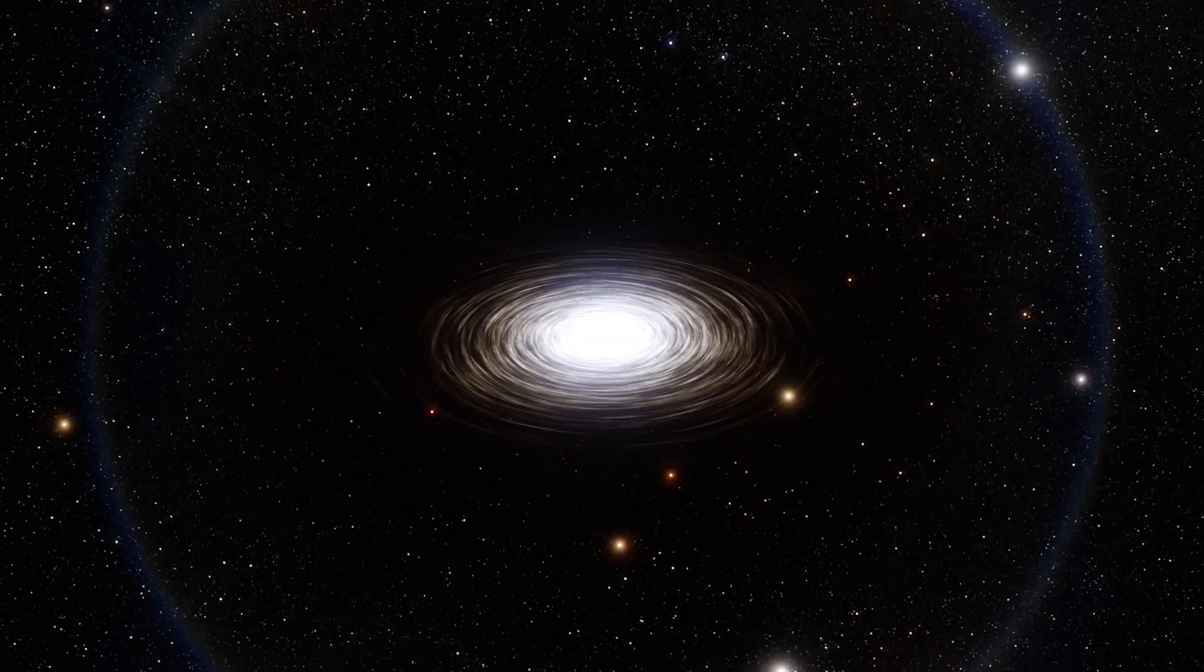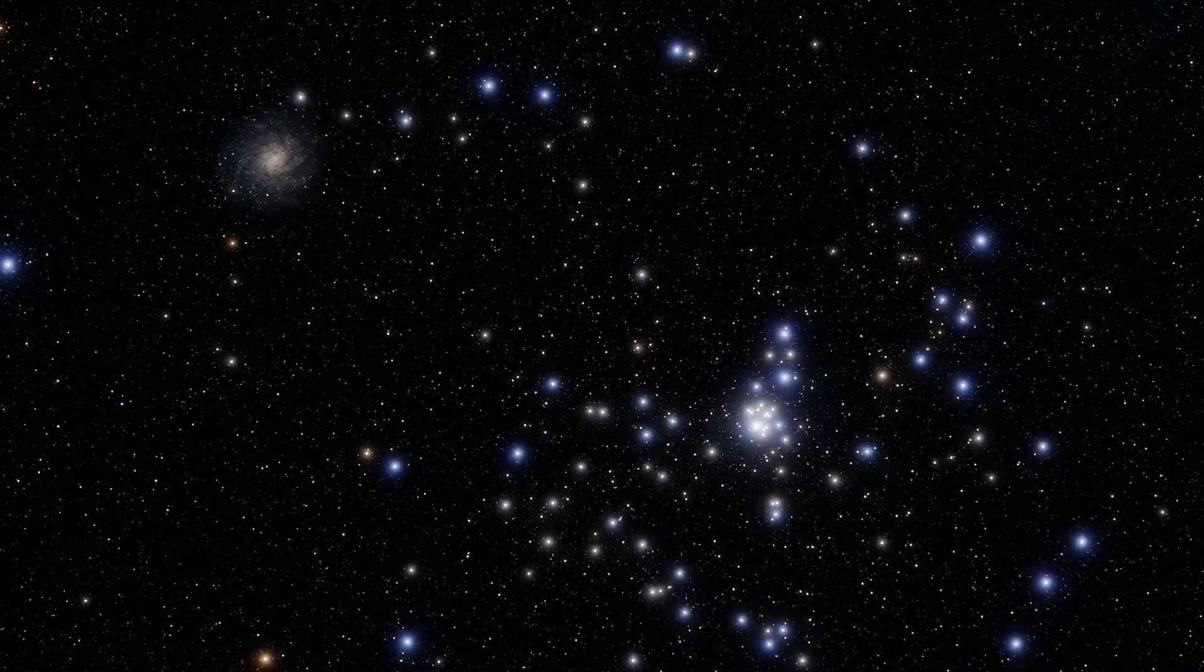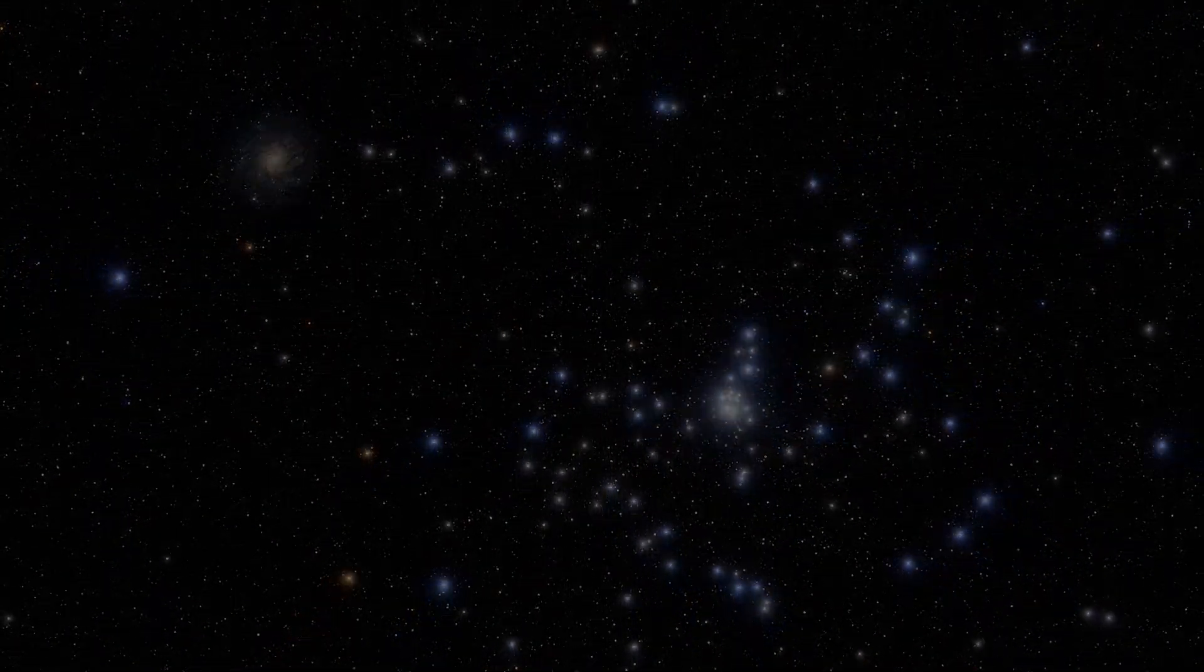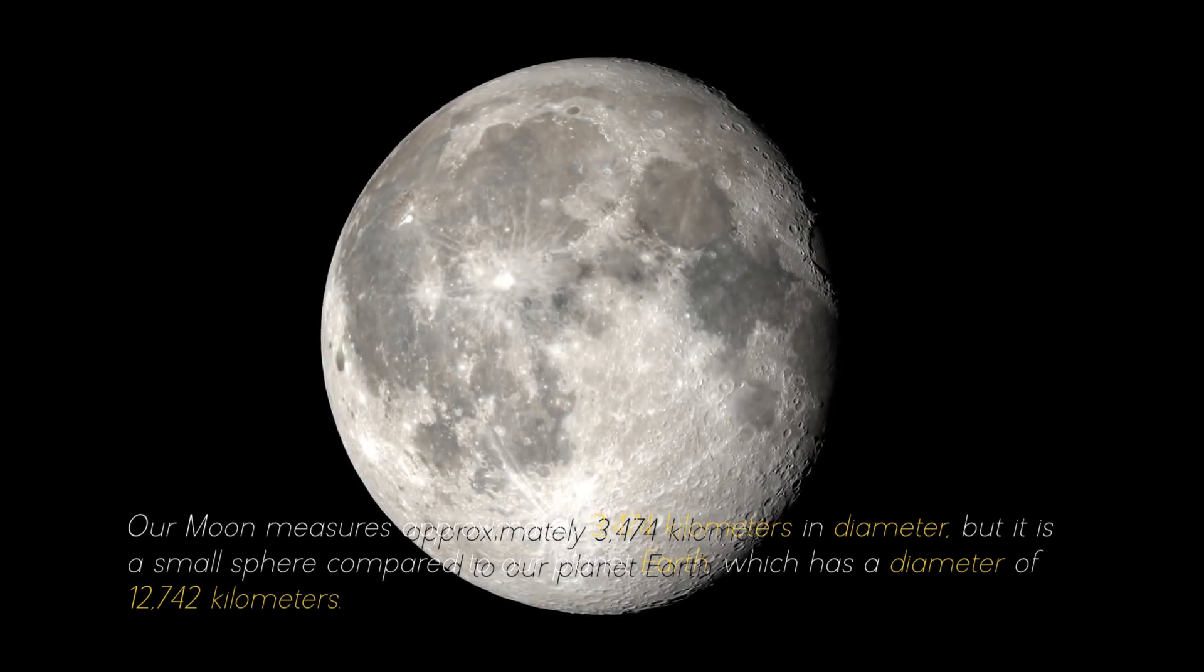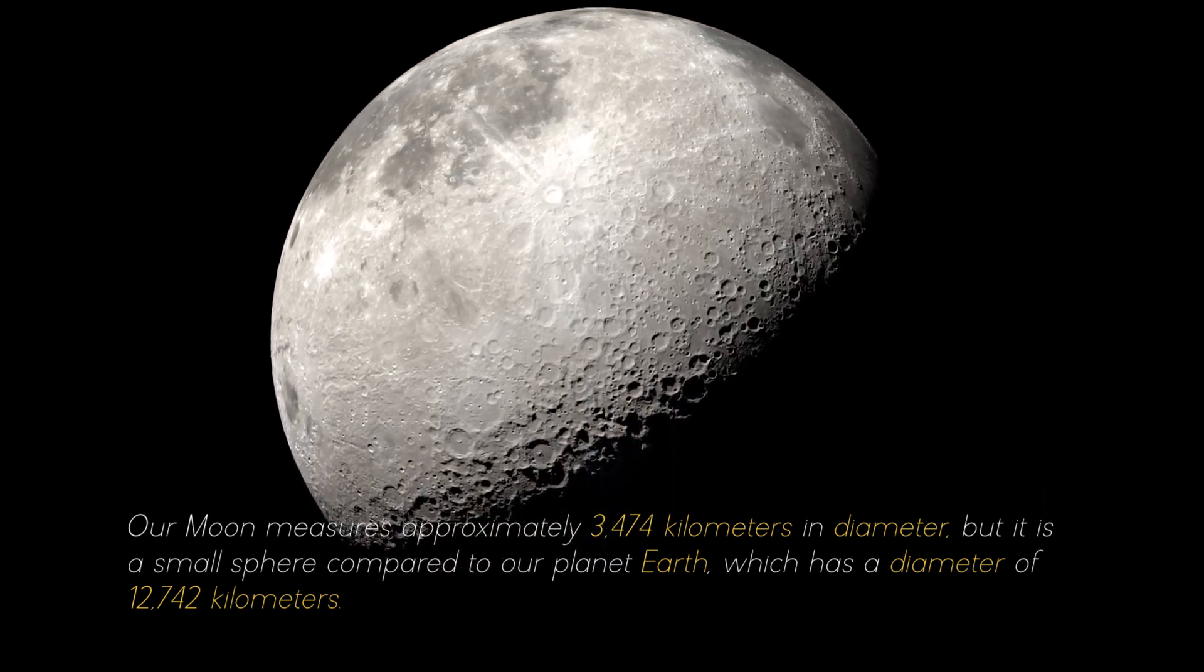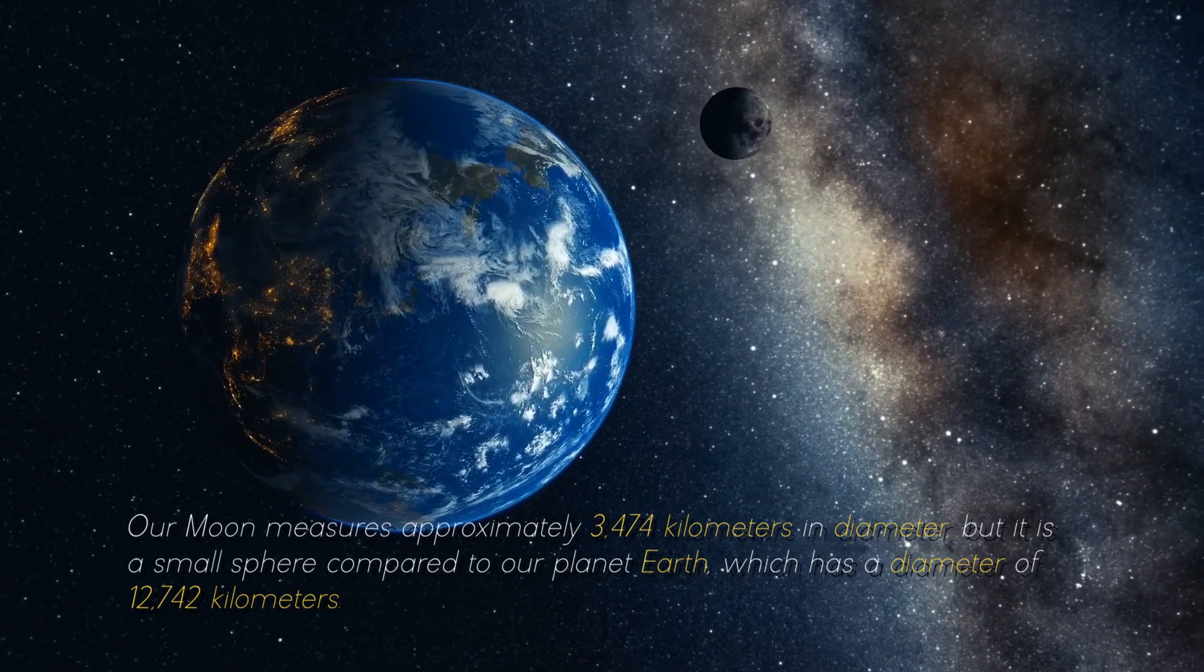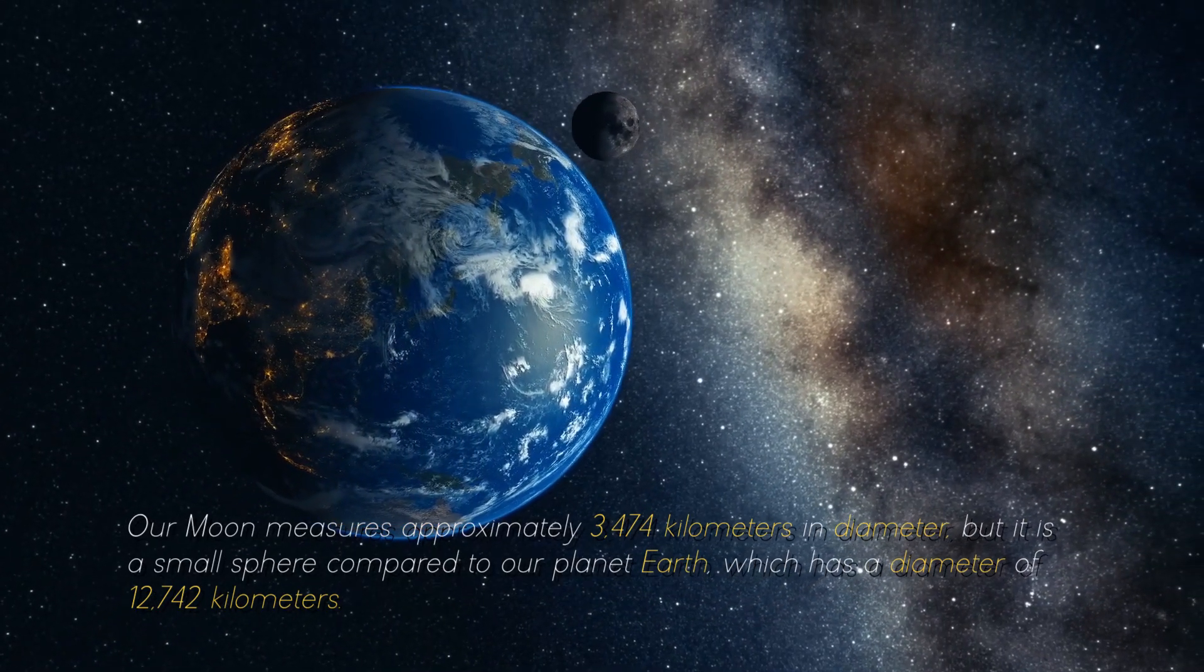To give you an idea of the colossal objects and structures that abound in the cosmos, it is necessary to start at the beginning. Our moon measures approximately 3,474 kilometers in diameter, but it is a small sphere compared to our planet Earth, which has a diameter of 12,742 kilometers.